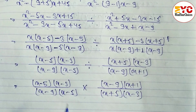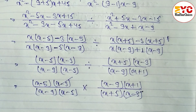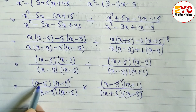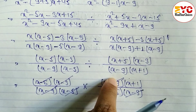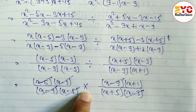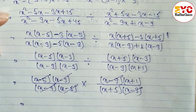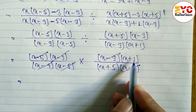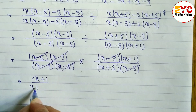Now you can see (x − 3) appears in both numerator and denominator, so we cancel them. Then (x − 9) also cancels. Then (x − 5) also cancels. Remember: numerator cancels with numerator and denominator with denominator — it doesn't matter which side since these are multiplications. The remaining factors are (x + 1) and (x + 5), so the answer is (x + 1) / (x + 5).